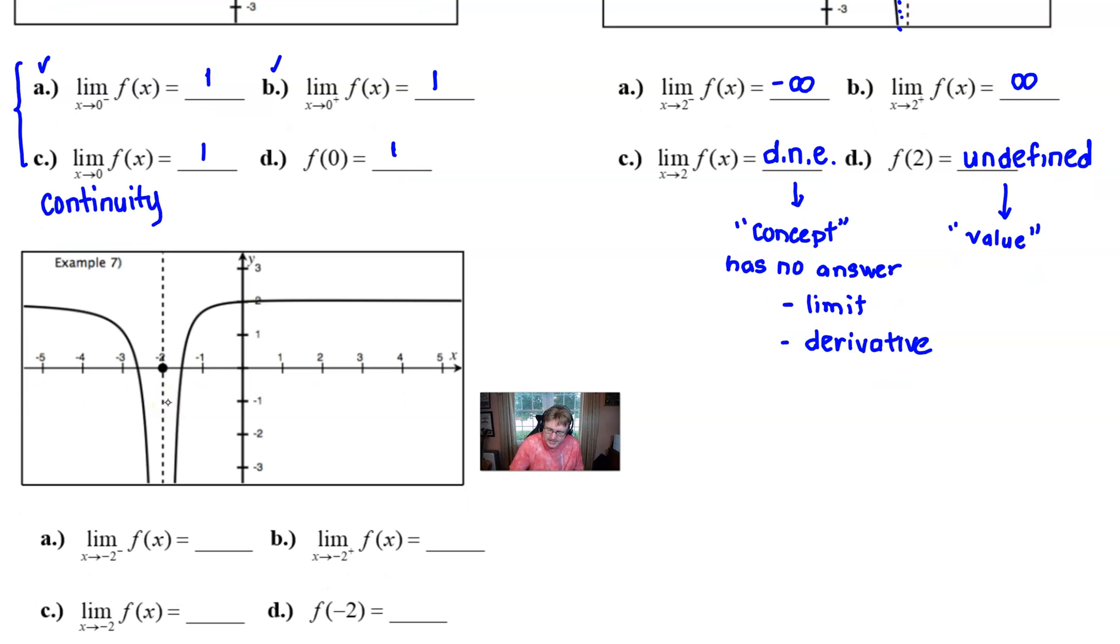So if we let x approach negative two from the left we find out that we're going way down all the way to negative infinity. And another change in this example is that we have from the right side that same approach downward to negative infinity.